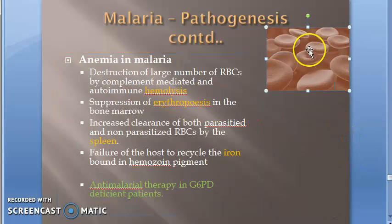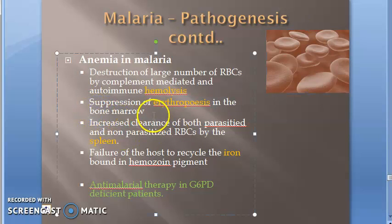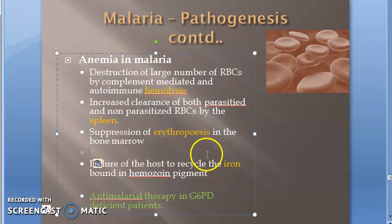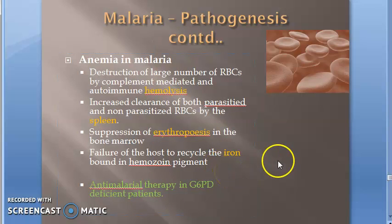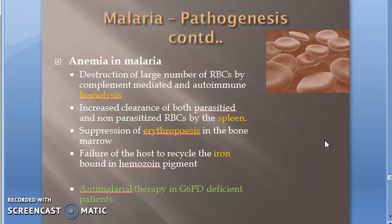Anti-malarial therapy itself can also cause anemia. In summary, anemia in malaria is caused by hemolysis from RBC rupture to release merozoites, spleen destruction of parasitized and non-parasitized RBCs, suppression of erythropoiesis, and failure to recycle iron. Anemia is very important and should be included when writing about malaria.